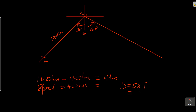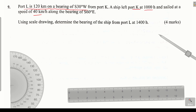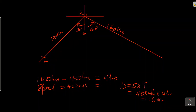Speed is 40 kilometers per hour, multiplied by time of 4 hours, gives 160 kilometers. So this distance from port K to where the ship is at 14:00 hours is 160 kilometers, calculated using the time and speed.